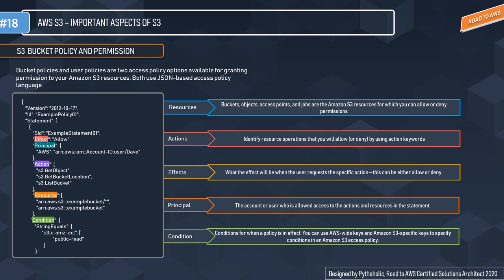The five policy elements are: Effect — tells what happens when the user requests a specific action, either allow or deny; Principal — specifies the ARN for the account or user allowed access to the resource; Action — lets you identify resource operations you will allow or deny using action keywords (e.g., only read or list objects, not delete); Resource — specifies what resources like buckets, objects, access points, or jobs you allow or deny permissions for; and Condition — an optional block to specify conditions for when a policy is in effect.